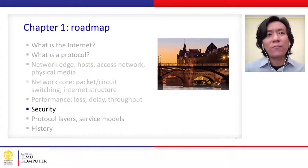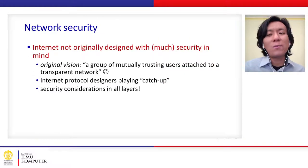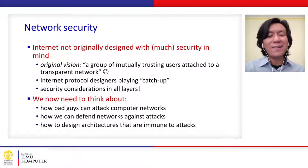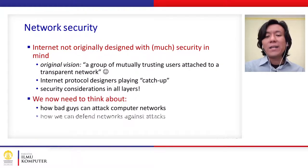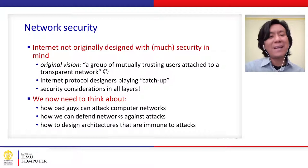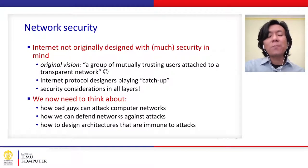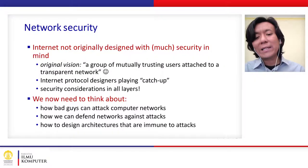Now we move to security. The internet was originally not designed with much security because the early users trusted each other. But now there are bad actors that can attack computer networks. In this chapter we will learn what attacks can happen and what lines of defense we can implement to protect computer networks.